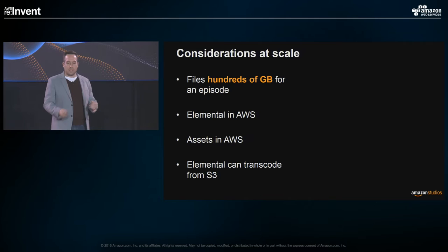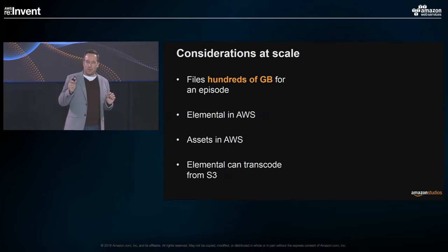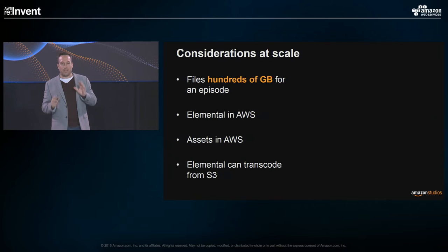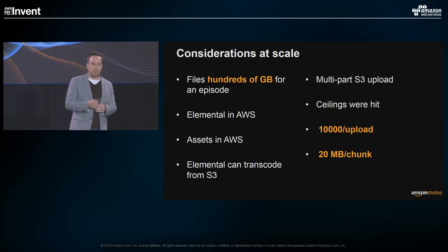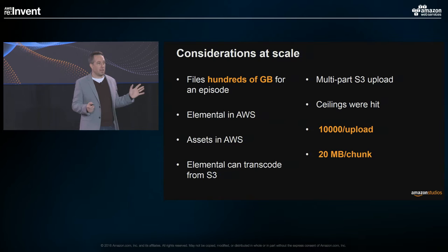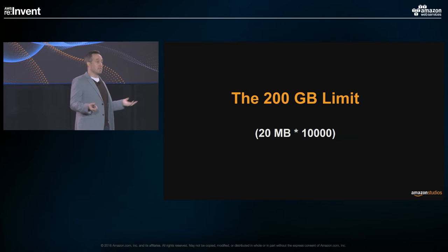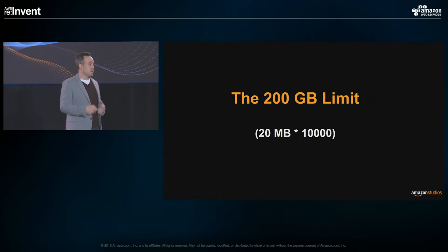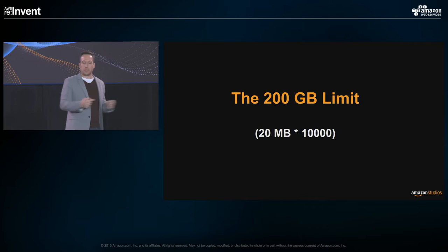UHD files are big. Elemental is in AWS. Our assets are in S3. Elemental can transcode directly from S3 — so far, everything seems great. But we started to realize there's a maximum of 10,000 parts per upload — that's an S3 limitation. And Elemental on their back end had set part sizes at 20 megabits per chunk. So at 20-megabit chunks with a 10,000-part limit, that's a maximum file size of 200 gigabytes. Obviously that's a problem for a file that is actually 280 gigabytes. So we had to start re-engineering how we were transcoding our files and moving them around within our S3 and Elemental environments.